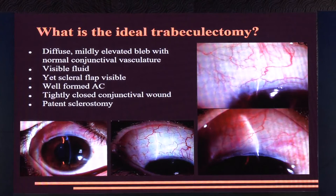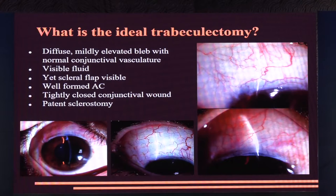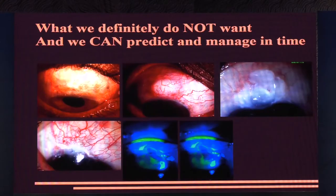The ideal trabeculectomy should leave you with a diffuse, mildly elevated bleb with normal conjunctival vasculature, visible fluid, yet the scleral flap should be visible, a well-formed AC, a tightly closed conjunctival wound, and a patent sclerostomy. What we definitely don't want — and we can predict and manage in time — are scarred blebs, tenon cysts, thin cystic blebs, fibrosis, and of course a leaky bleb.